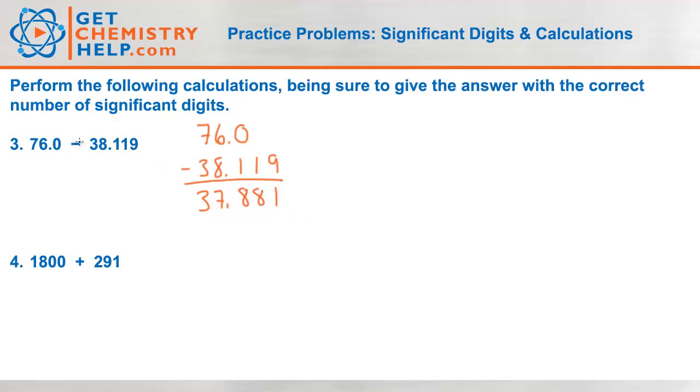Now when we're doing subtraction or addition, it's not significant figures. It's actually the least precise in terms of places. This number is precise out to the tenths place. 38.119 is precise out to the thousandths place. So the least precise one is this one that's only precise out to the tenths place. I'm going to round it off at the tenths place. 37.881 would round off and that would become 37.9.